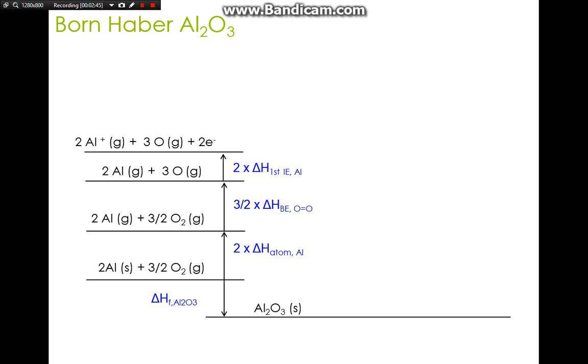Aluminum will need to become Al³⁺, so we need to remove three electrons from them. For the cycle you will need to put each electron removal as one stage. First of all we remove one electron from aluminum atom - that is known as the first ionization energy of aluminum. Again we multiply by two because we have two moles of aluminum.